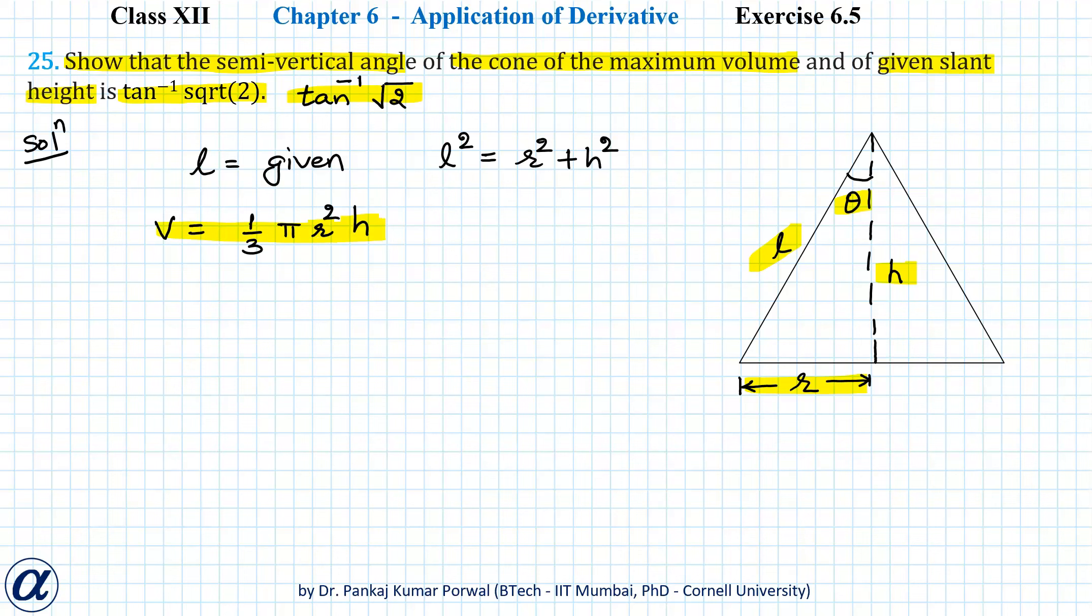However, we can eliminate one of them using the relationship between l, r, and h. Because l is given, we can treat that as constant. From this equation, I can write r squared equals l squared minus h squared, and substitute that in my expression for volume, so I get l squared minus h squared times h.